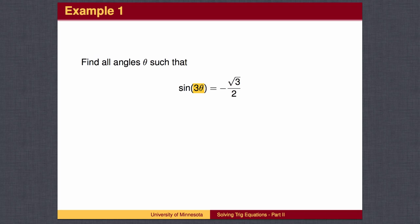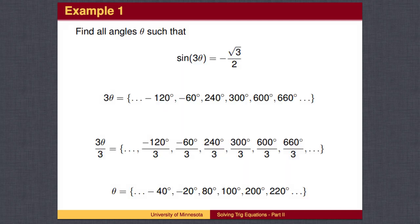What we have is an equation that says the sine of a certain angle is negative square root 3 over 2. We begin by making a list of angles whose sine is negative square root 3 over 2. In this case, the list contains the possible angles for 3 theta. We can then divide each angle by 3 to get the answers for theta.